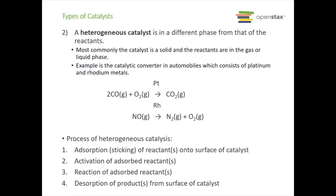The next type of catalyst is a heterogeneous catalyst, which is in a different phase from the reactants — 'hetero' meaning different. Often this catalyst is a solid and the reactants are in the gas or liquid phase. One example is the catalytic converter in cars, which uses platinum and rhodium metals to convert carbon monoxide and NOₓ from incomplete combustion into CO₂, nitrogen, and oxygen. The process of heterogeneous catalysis involves adsorption — the reactants stick onto the surface of the catalyst — then they are activated and react on the surface, and finally the products desorb from the catalyst surface, regenerating it.